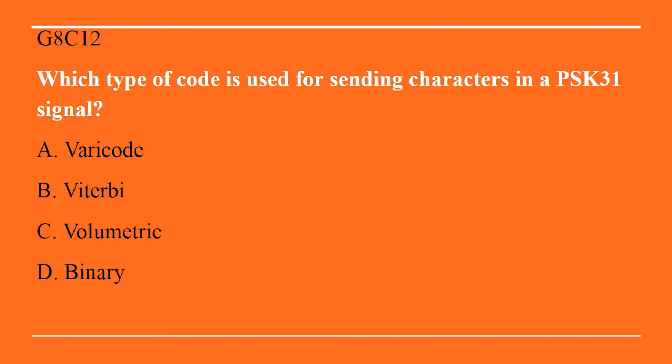G8C12: Which type of code is used for sending characters in a PSK31 signal? A. Varicode. B. Viterby. C. Volumetric. Or D. Binary. The answer is A, varicode.